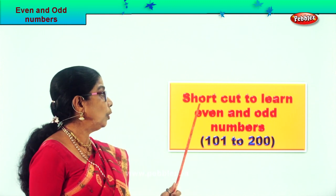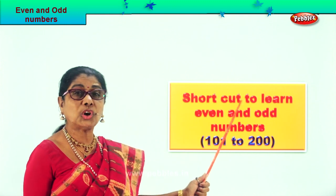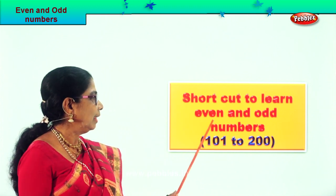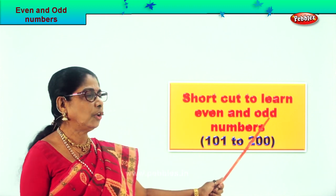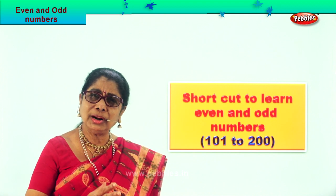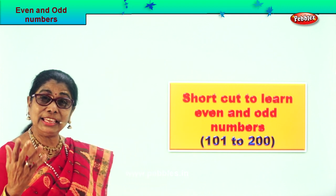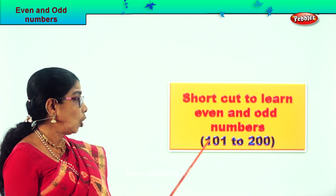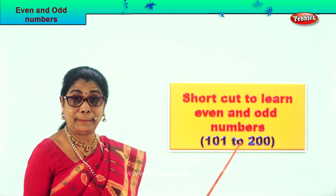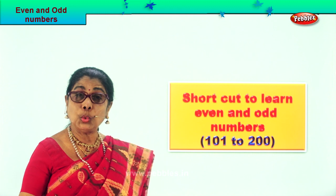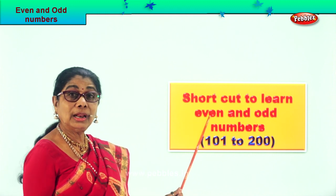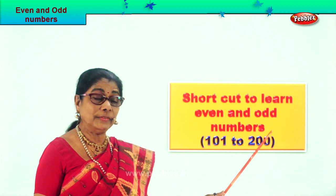Hi children, today we are going to learn shortcuts. What's the meaning of shortcuts? How to identify the even and odd numbers? Shortcut to learning to identify the even and odd numbers from 101 to 200. So three-digit numbers — when it becomes three-digit numbers, how to identify odd and even?